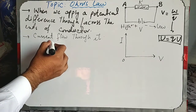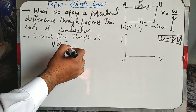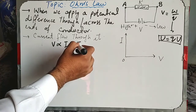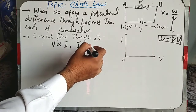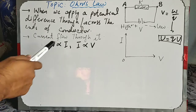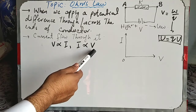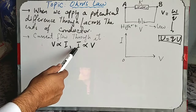We can see that applied potential is proportional to current, and current is proportional to applied potential — this can be represented both ways. When we apply the potential difference, there will be an electric current through the circuit.